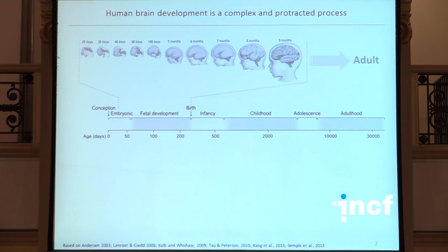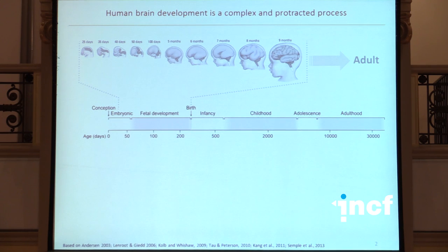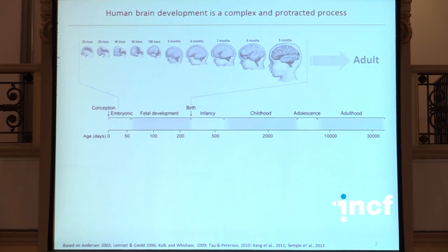To illustrate it, I'm going to show you this slide. If you put time on a logarithmic scale, this is prenatal development and this is postnatal development. You can divide it into phases such as embryonic, fetal development, infancy, childhood, adolescence, and adulthood. Looking at the structural development of the human brain, you can see that at seven months your brain is still smooth. When you are born, you have most of your primary and secondary gyri, even some tertiary ones.